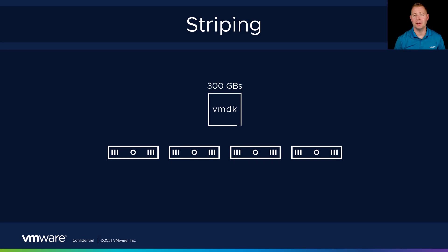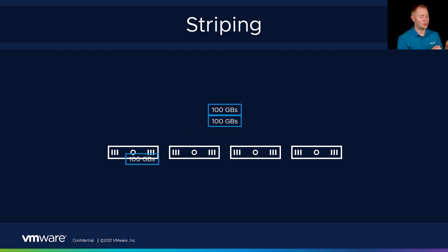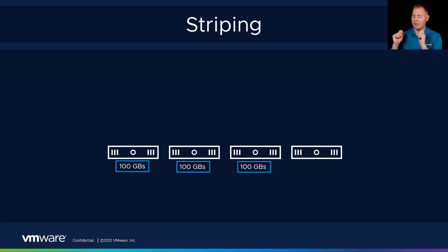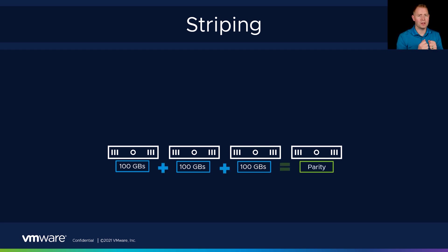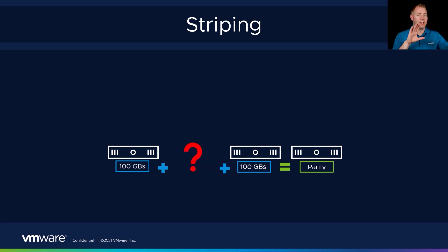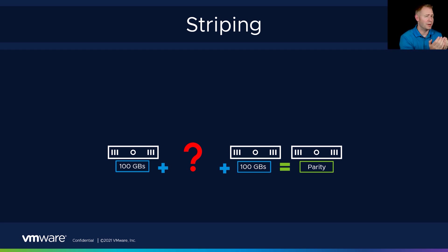Going down to our next layer: let's say you've got a 300-gig VMDK. I take that 300-gig VMDK and split it in thirds — 100 gigs on host one, 100 gigs on host two, and 100 gigs on host three. On host four, I put our ledger — we call that parity. If I lost any of the data from those other hosts, I could go to the parity piece and figure out exactly what's missing: not just the size, like I lost 100 gigs, but what was that actual data inside of there.